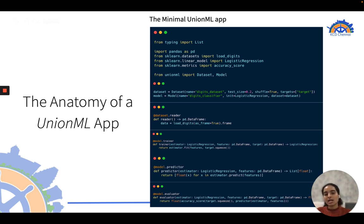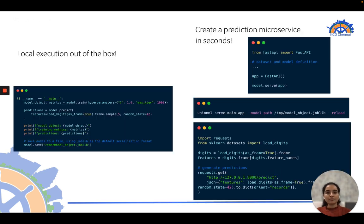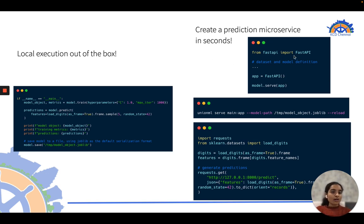To deploy locally, execution is straightforward. To create a prediction microservice using FastAPI, you spin up the server, serve the model, and hit the endpoint to get predictions — giving you a production-ready ML application.